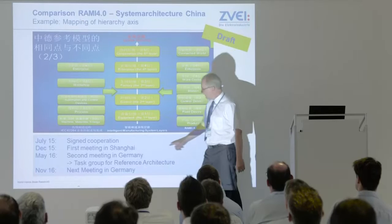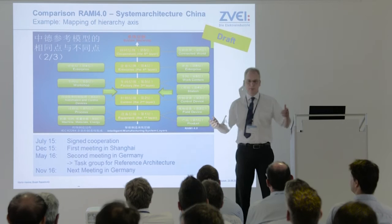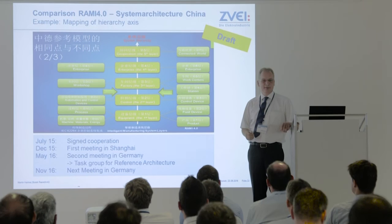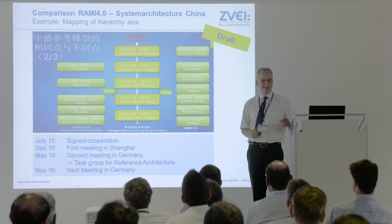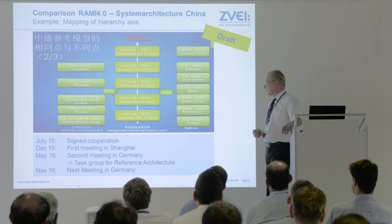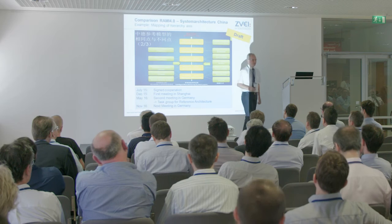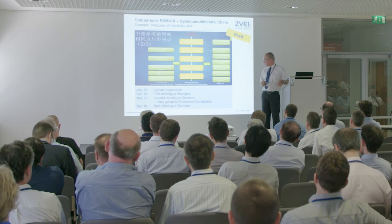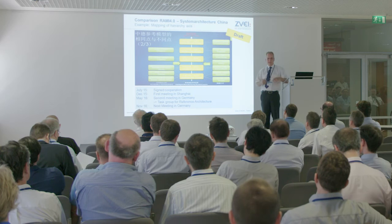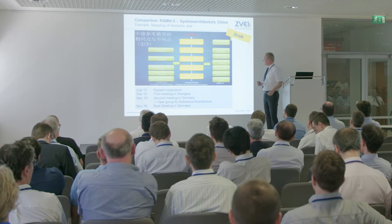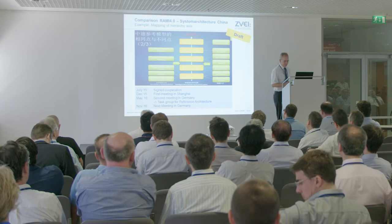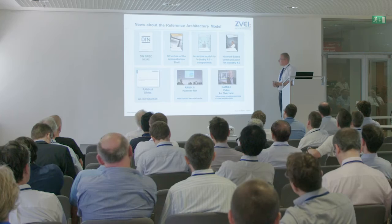Chancellor Merkel signed a cooperation in July last year, and we had the first meeting in December in Shanghai with about 600 people — it was only presentations, but nice to meet people and see the main players. Then we had a second meeting in May this year here in Germany, with a smaller group of only technical people. We also decided to make a task group for this system reference architecture, matching it with the RAMI model. I believe we will have a good possibility to bring things together here. The next meeting is in November this year.